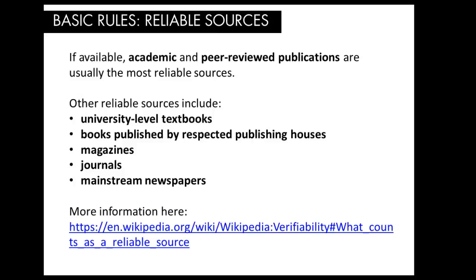Another important guideline to follow is using reliable sources. Source material must have been published — defined here as made available to the public in some form. Unpublished materials are not considered reliable. You should use sources that directly support the material presented in an article and are appropriate to the claims made. If available, academic and peer-reviewed publications are usually the most reliable sources, but there are a number of other reliable sources, including university-level textbooks, books published by respected publishing houses, magazines, journals, and mainstream newspapers.